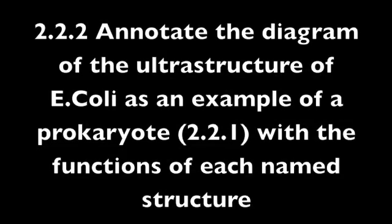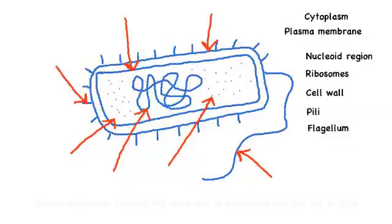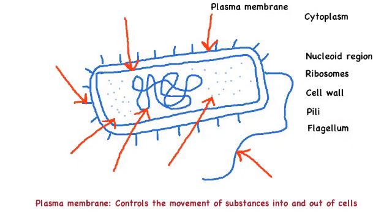So now we're going to annotate parts of the prokaryotic cell with their functions, starting with the plasma membrane. This is selectively permeable to ions and organic molecules and controls the movement of substances into and out of the cell.